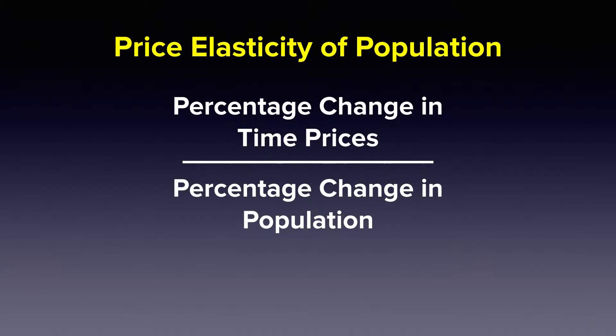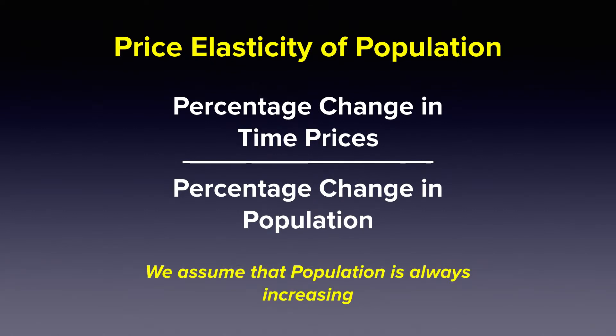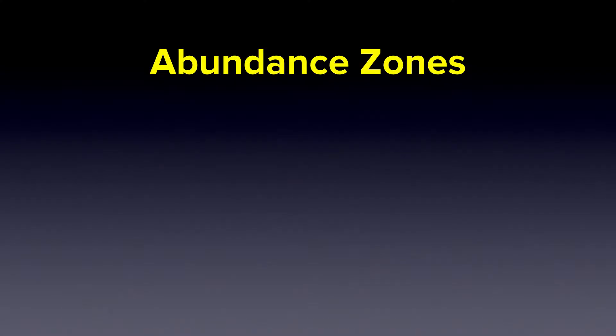Note that we always assume that population is increasing. This equation will produce a coefficient, and that coefficient will indicate one of four abundance zones.